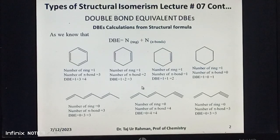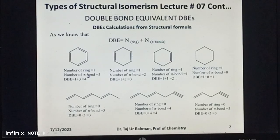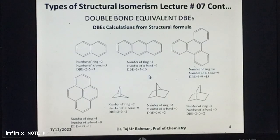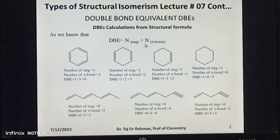DBE values for closed-chain, open-chain, unsaturated, and saturated compounds have been calculated and shown. These DBE values have been calculated simply by counting the number of rings and number of pi bonds in these compounds and putting these values in the formula: DBE = number of rings plus number of pi bonds.